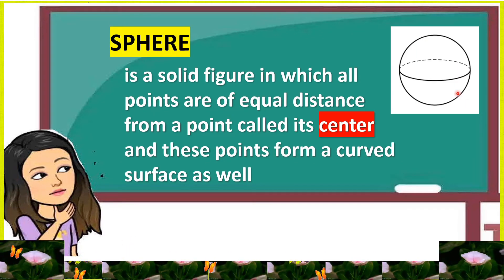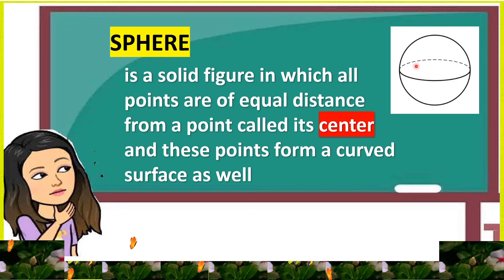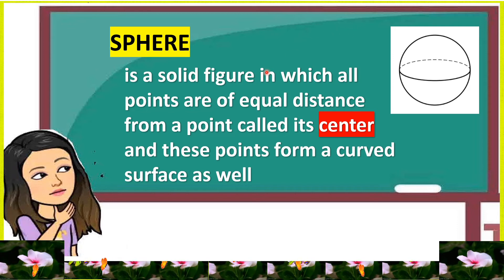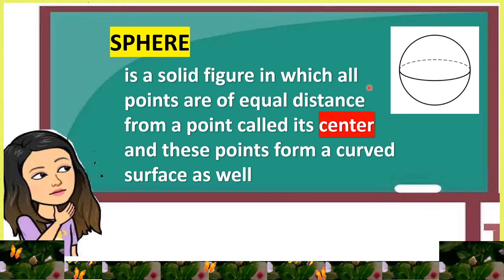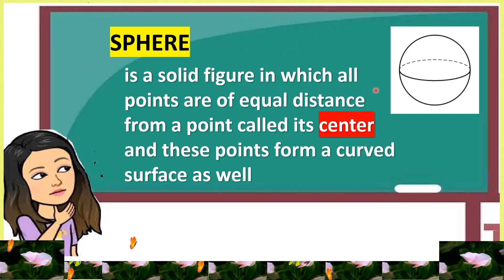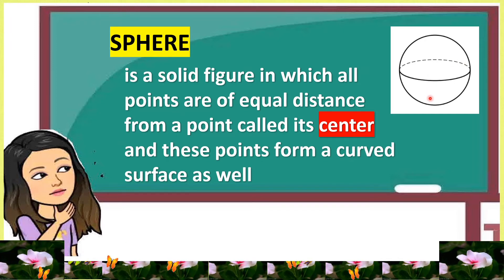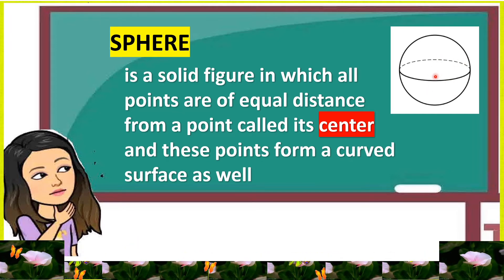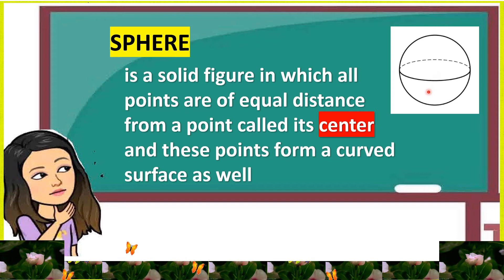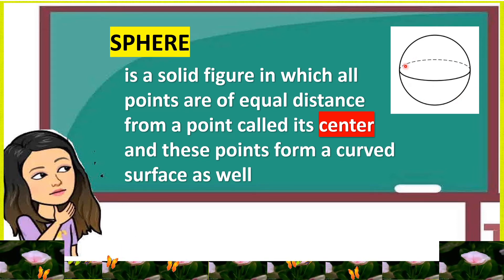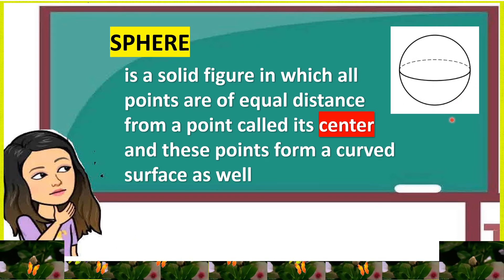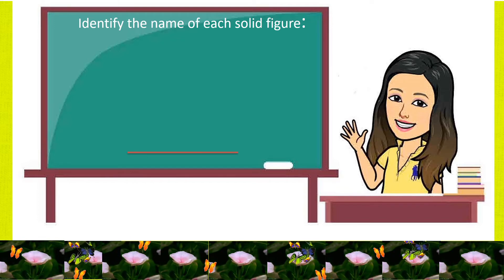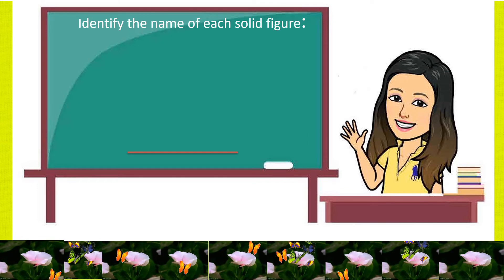And we have cone. A cone is a solid figure that has a circular flat base and a curved surface pointed towards the top. The pointed top end of the cone is called the apex. And we have the sphere. A sphere is a solid figure in which all points are of equal distance from a point called its center, and these points form a curved surface.